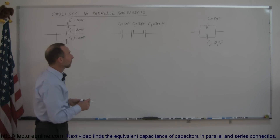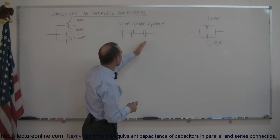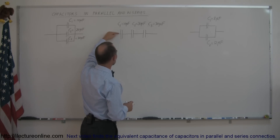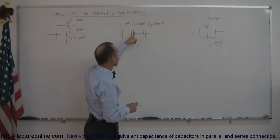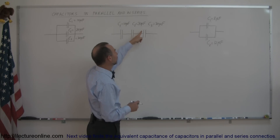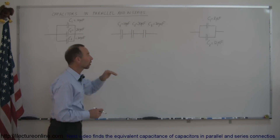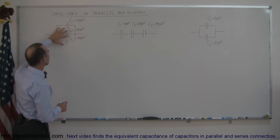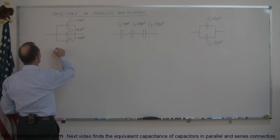Another way of hooking up components in circuits is called series, which means there's only one path. If a charge gets pushed onto this capacitor, it pushes a charge away from that plate, which goes onto the next capacitor, pushes charge away from that plate, and so forth. There's no choice — all charges must follow the same path. This is called a series connection.